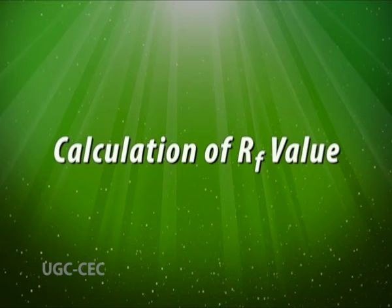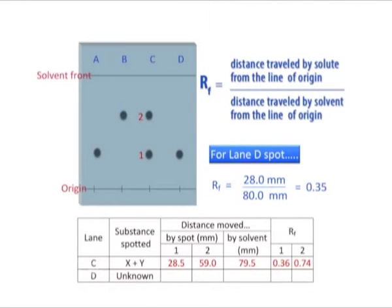If the TLC plate runs samples that are too concentrated, the spots will streak and run together. If this happens, you will have to start over with a more dilute sample. The retention factor, or RF, is defined as the distance travelled by the solute from the line of origin divided by the distance travelled by the solvent from the line of origin.